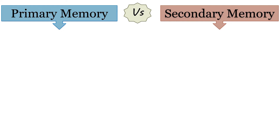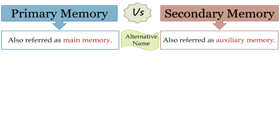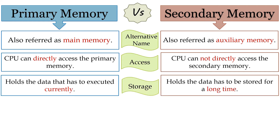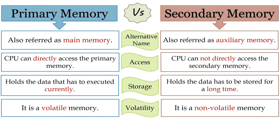Knowing primary and secondary memory in detail, now let us discuss the differences between them. Primary memory is known as main memory whereas secondary memory is known as auxiliary memory. CPU can directly access the primary memory of your system whereas CPU cannot directly access the secondary memory. Primary memory holds the data that has to be executed currently whereas secondary memory holds the data that has to be stored for a long period. Primary memory is volatile in nature, however secondary memory is non-volatile in nature.